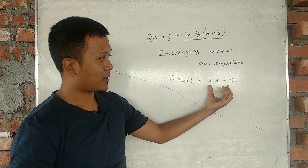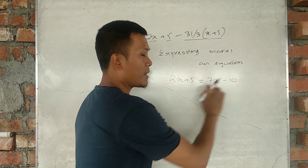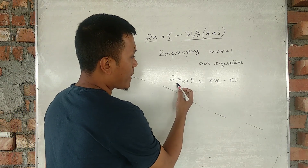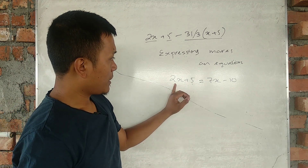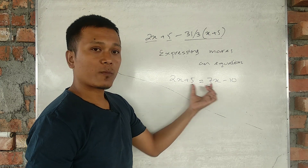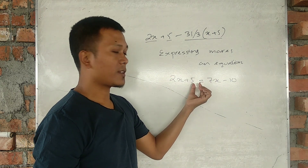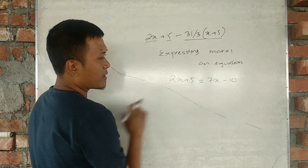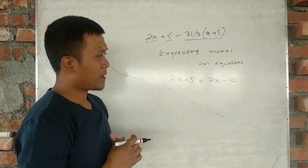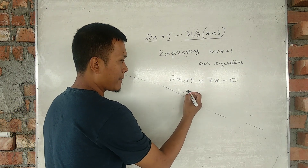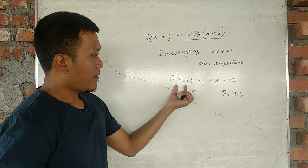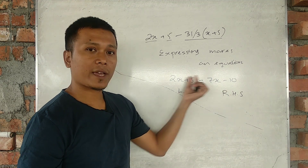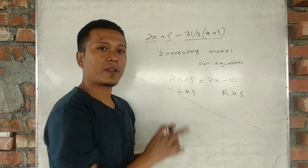In an expression there is no equal-to sign, while in an equation there is an equal-to sign. An equation has a left-hand side and a right-hand side. Terms on the left-hand side and terms on the right-hand side are separated by the equal-to sign.